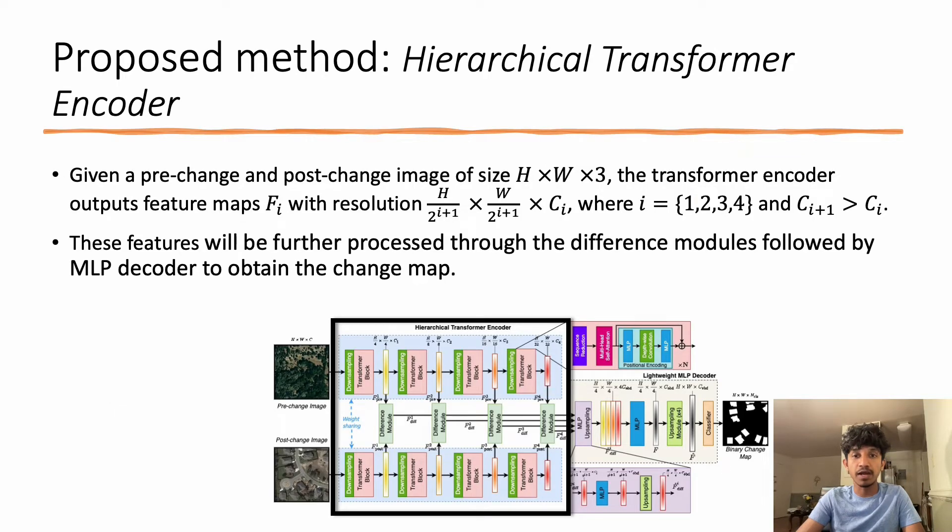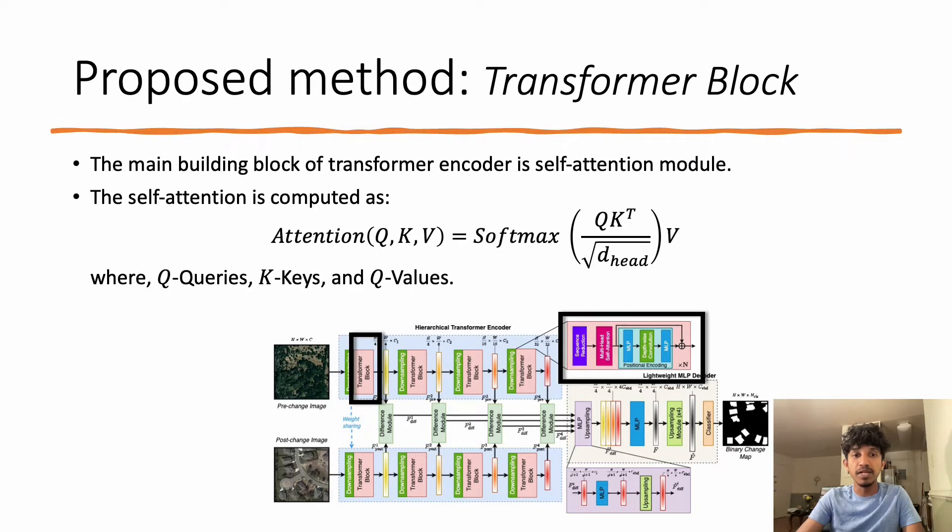Given an input bi-temporal image, the hierarchical transformer encoder generates convolutional-like multi-level features with high-resolution coarse features and low-resolution fine-grained features required for change detection. Concretely, given a pre-change or post-change image of resolution H × W × 3, the transformer encoder outputs feature maps of different spatial resolutions, which will be further processed through the difference module followed by MLP decoder to obtain the change map. The main building block of the transformer encoder is the self-attention module.